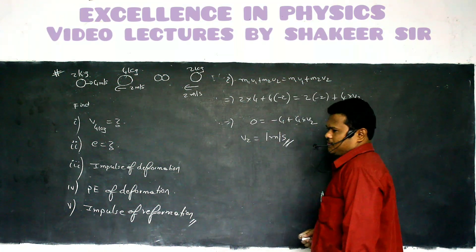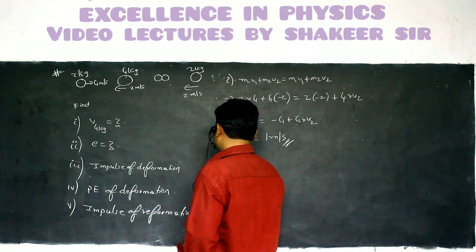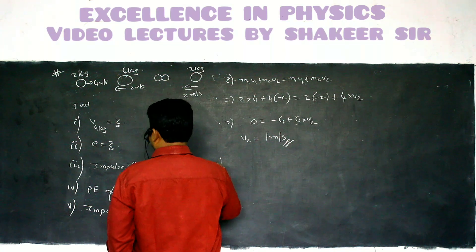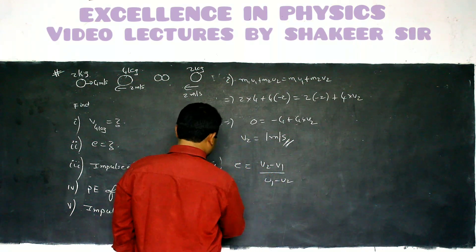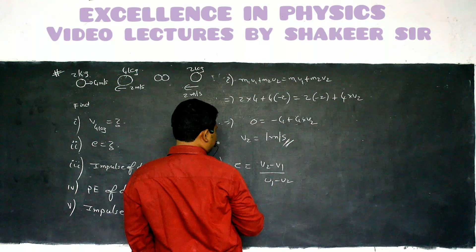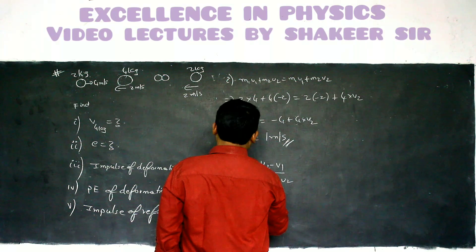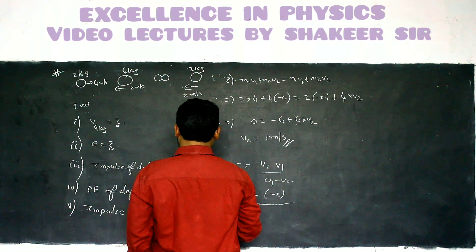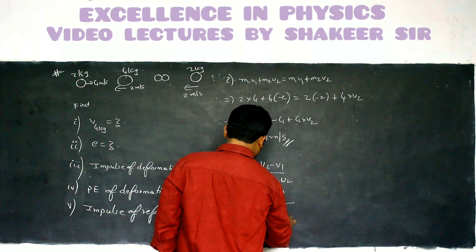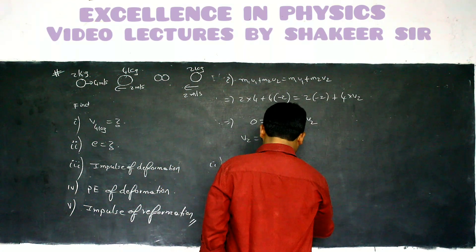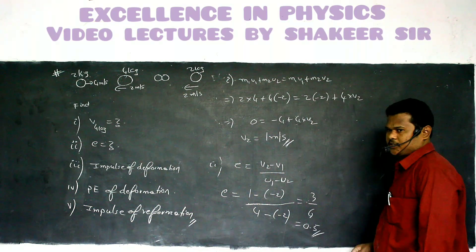The V1 and V2 formulas are only for elastic collision and cannot be used here. Using coefficient of restitution: E equals (V2 minus V1)/(U1 minus U2) equals (1 minus (-2))/(4 minus (-2)) equals 3/6 equals 0.5. This is the coefficient of restitution.